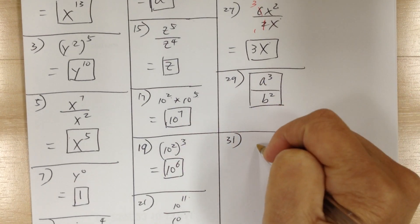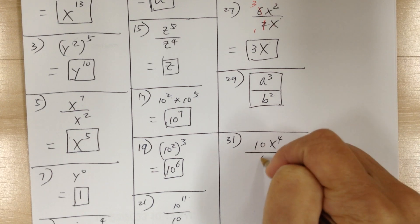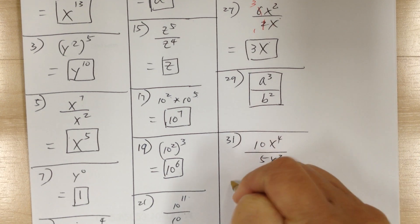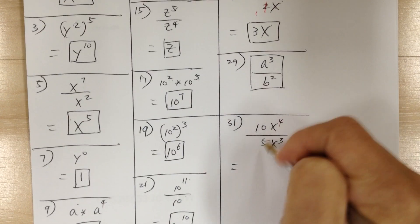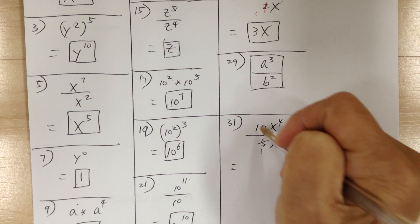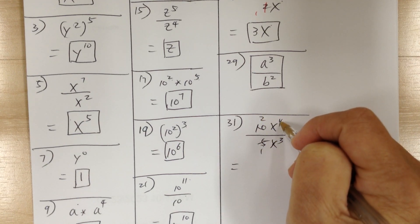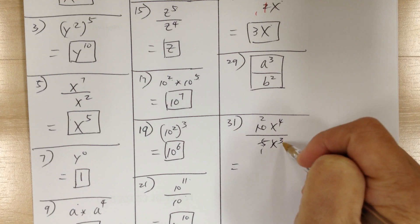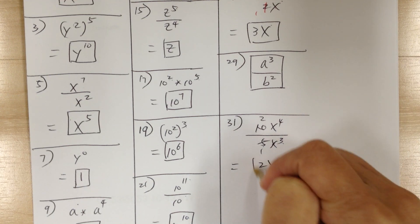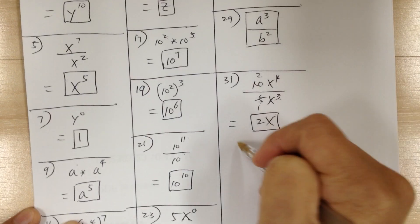Number 31, you have 10x to the 4 over 5x to the 3. So 5 and 10 — divide by 5 — you get 2. And x to the 4 over x to the 3 is x. So the answer is 2x. 4 minus 3 gives you 1.